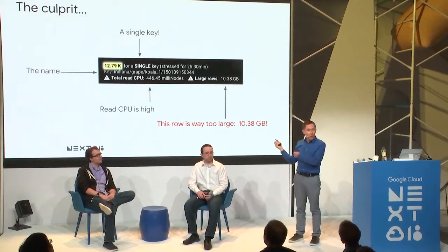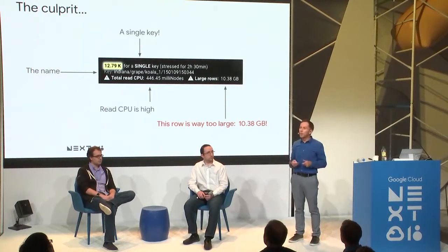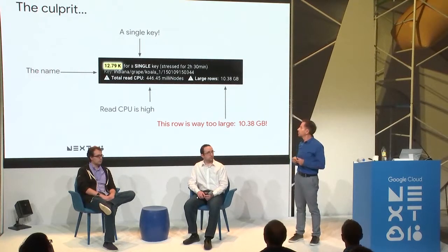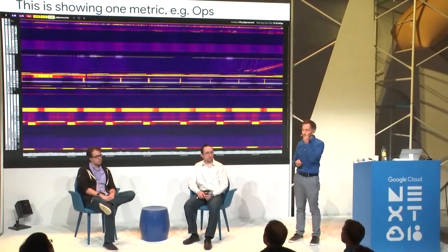That shows how easy Key Visualizer is: open it, look at the overview, click the alert button, and it shows you the problem.